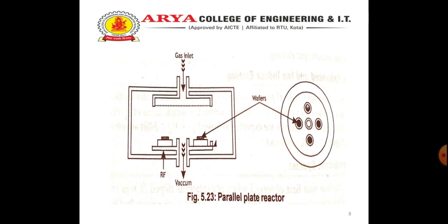In the next slide, you can see how reactive ion etching takes place. It is a parallel plate reactor that shows the reactive ion etching. Reactive ion etching has been developed to achieve a much higher selectivity than that achieved by ion milling. Reactive ion etching etches the wafer anisotropically. It is also called ion assisted etching or reactive sputter etching.